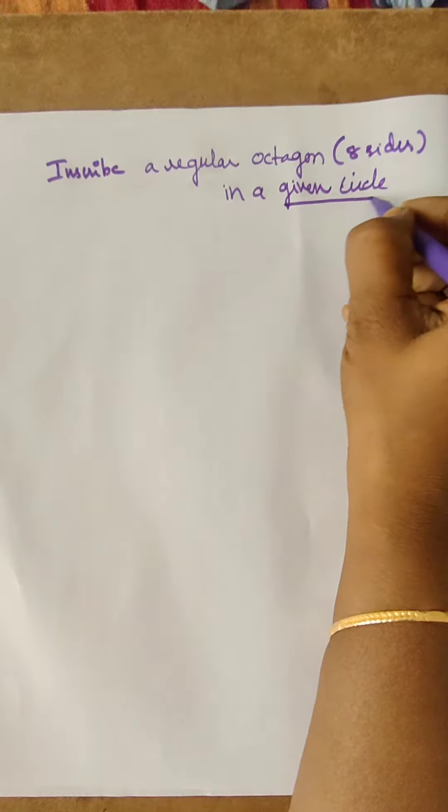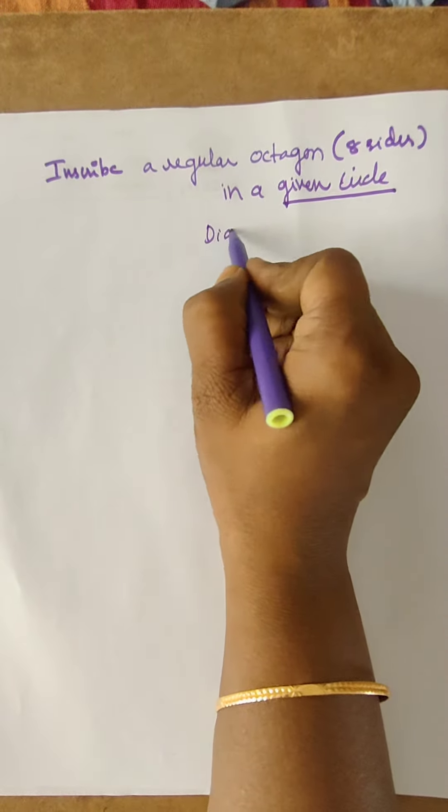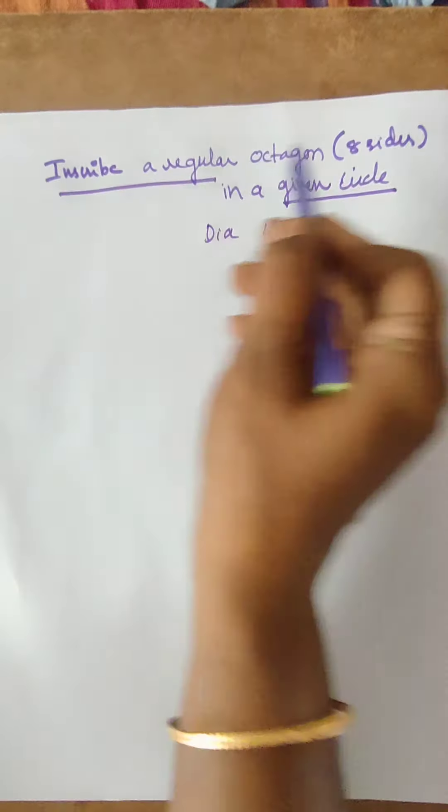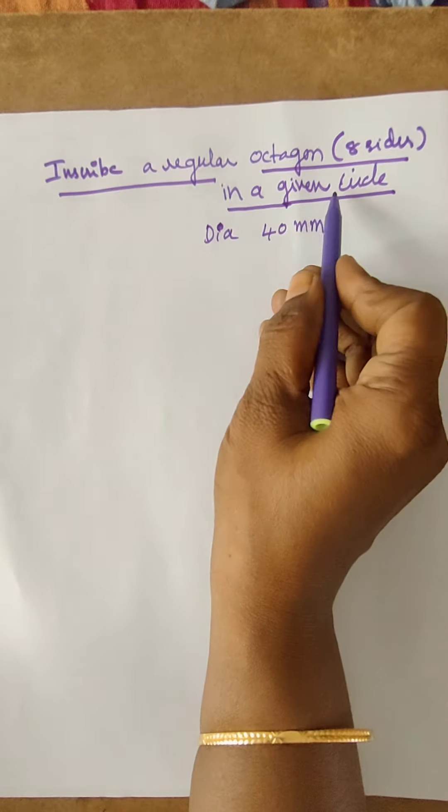So, the given data is circle diameter, say 40 mm. Ok, so how to inscribe a regular octagon in a given circle? The given data is circle diameter.